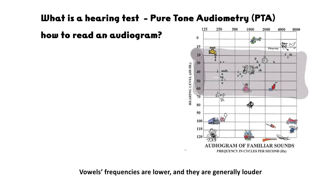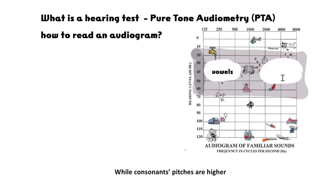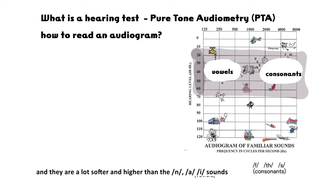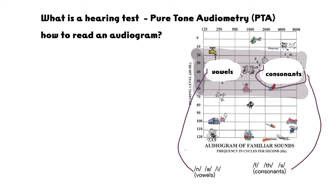For example, vowel frequencies are lower and they are generally louder, while consonant frequencies are higher and they are softer, which makes them harder to hear. For example, 'th, th, th' — these are consonants, and they are a lot softer and higher than the 'n, a, e' sounds, which are the vowels.